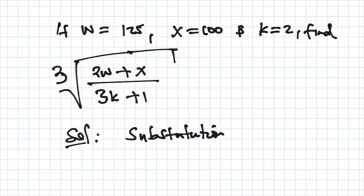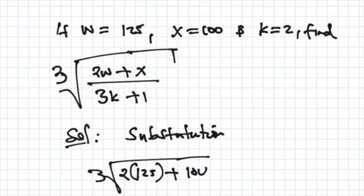So we have the cube root of 2w is 125, plus x is 100, over 3k, k is 2 plus 1.